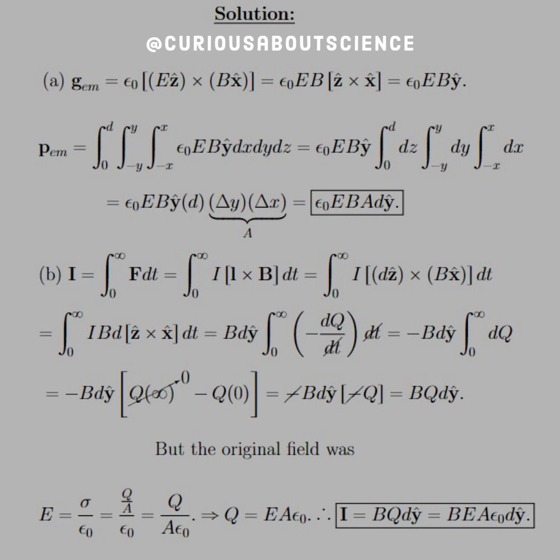However, I can be written as the rate of change of Q per time, hence -dQ/dt. Since we're discharging, it has the negative sign. The dt cancels, so we're left with a negative sign out front, Bd ŷ, and the integral from 0 to ∞ of dQ.